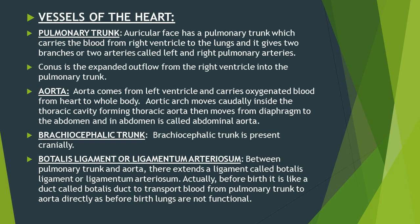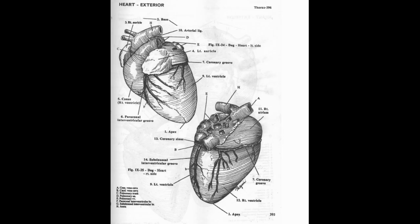On the auricular face of the heart there is a pulmonary trunk which carries deoxygenated blood from the right ventricle to the lungs. The pulmonary trunk gives two branches: the left pulmonary artery and the right pulmonary artery, which carry deoxygenated blood to the respective lungs.